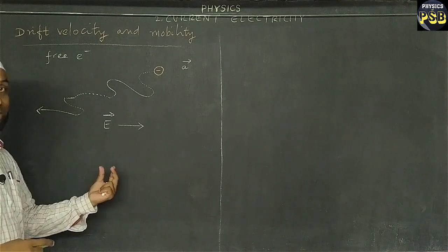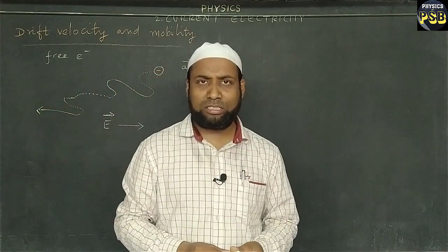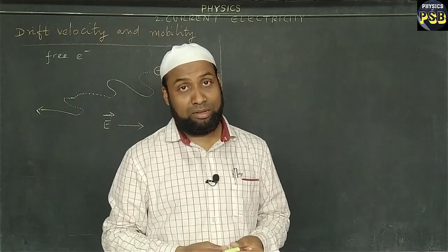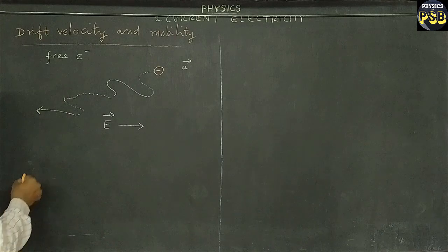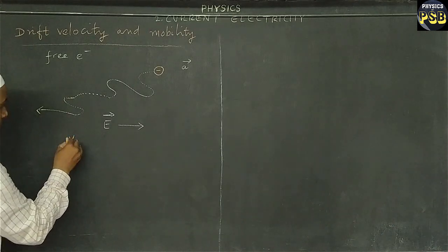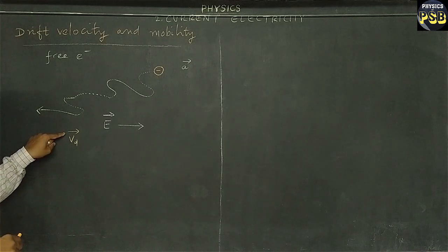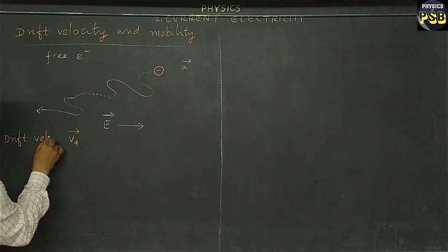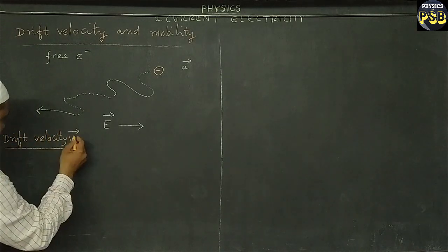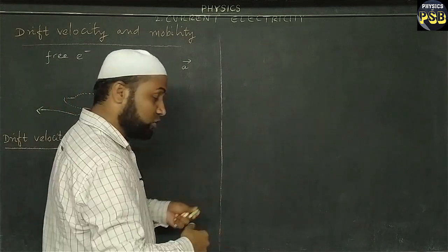So they move in this way randomly but in a particular direction opposite to that of electric field. It constitutes electric current in the conductor. When they get scattered by the positive ion, their velocity decreases. This reduction in the velocity of free electrons while moving towards the positive terminal is known as drift velocity,